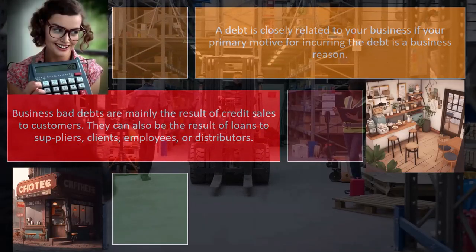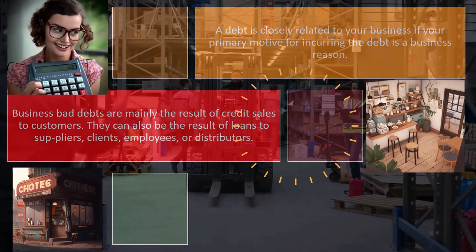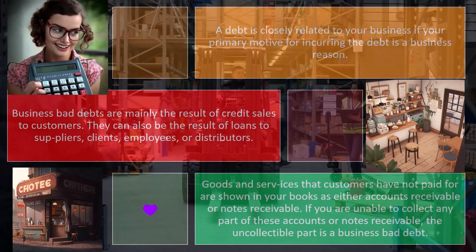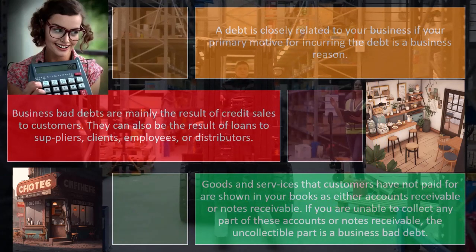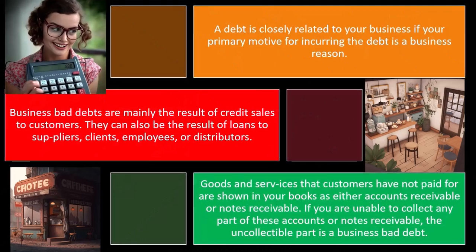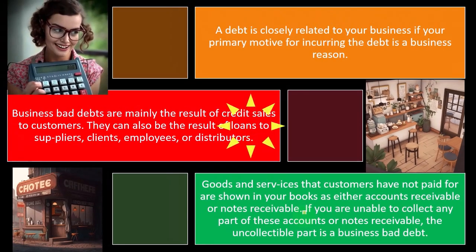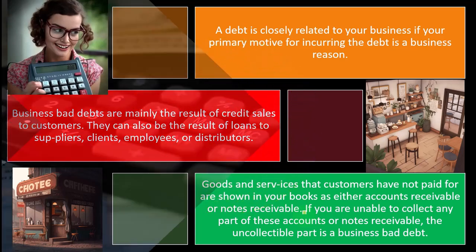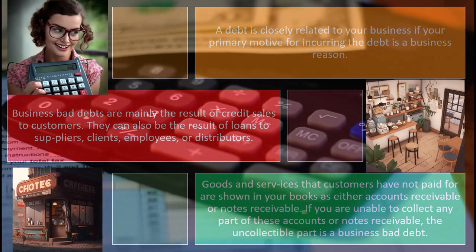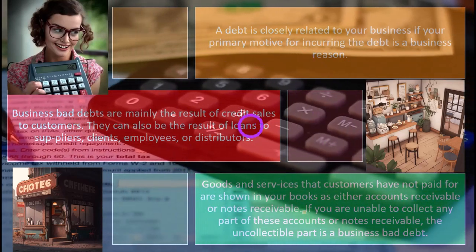Goods and services that customers have not paid for are shown in your books as either accounts receivable or notes receivable. From an accounting standpoint, this would be an accrual thing, because if you make sales on account, you're not getting paid at the point you do the sale. Like a law firm or accounting firm — you do the work, invoice the client, then track whether or not they're going to pay you in accounts receivable, which by its very nature is an accrual type of thing.